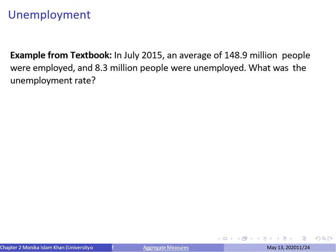Here is an example from the book. In July 2015, an average of 148.9 million people were employed and 8.3 million were unemployed. Using the unemployment rate formula, it equals 8.3 million divided by 148.9 plus 8.3 million, which equals 5.3 percent.